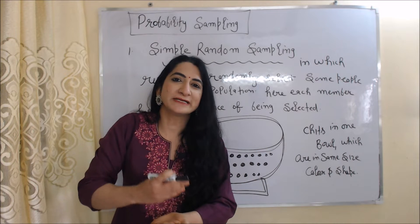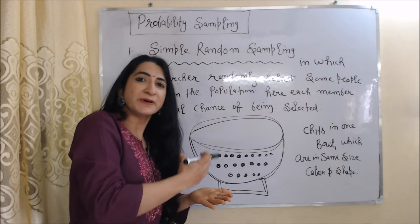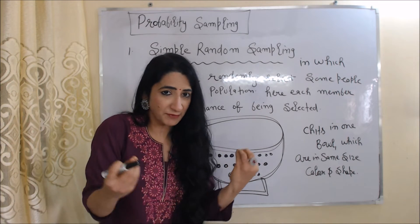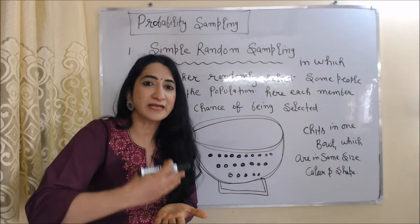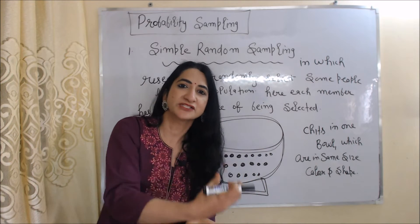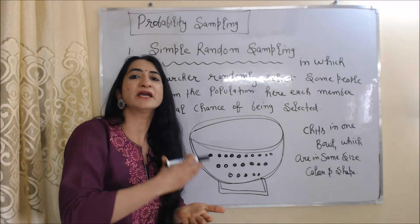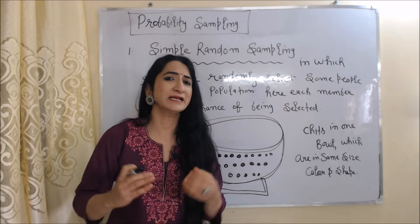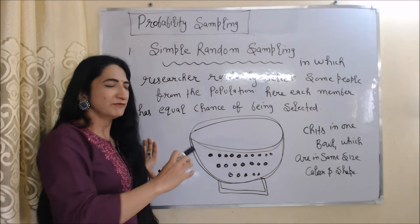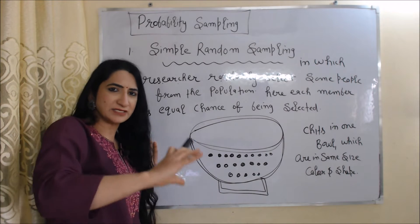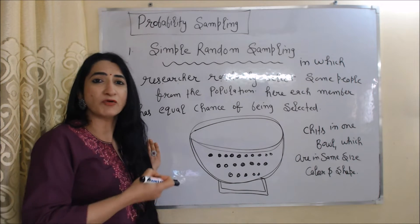First, we are going to talk about probability sampling. The first type is simple random sampling. Simple random sampling is a type of sampling in which a researcher randomly selects some people from the population, and each member has an equal chance of being selected. For example, there are many chits in a bowl of the same color, size, and shape — you randomly pick one chit, and each chit has an equal chance of being selected.